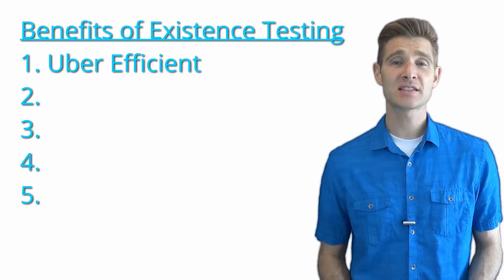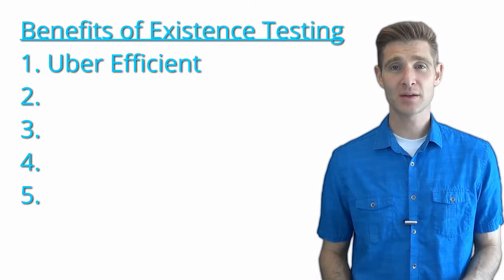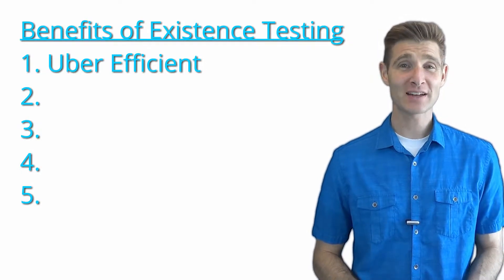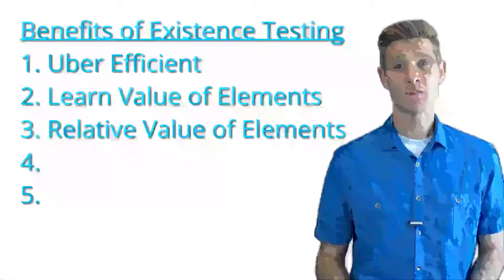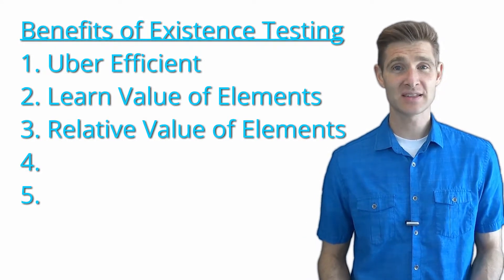The second thing is that existence testing functions like a multivariate test, but it's an A-B test in that you can learn the value of your elements and the relative value of those elements to each other. It also has many advantages over a multivariate test in that you can run an existence test on elements that are drastically different, that are on different places on the page.